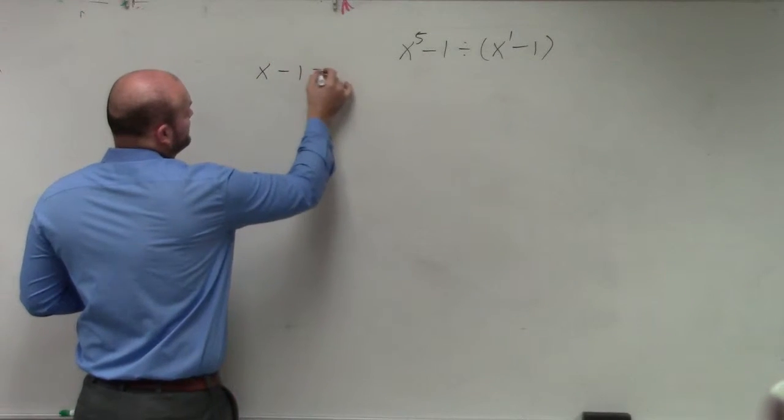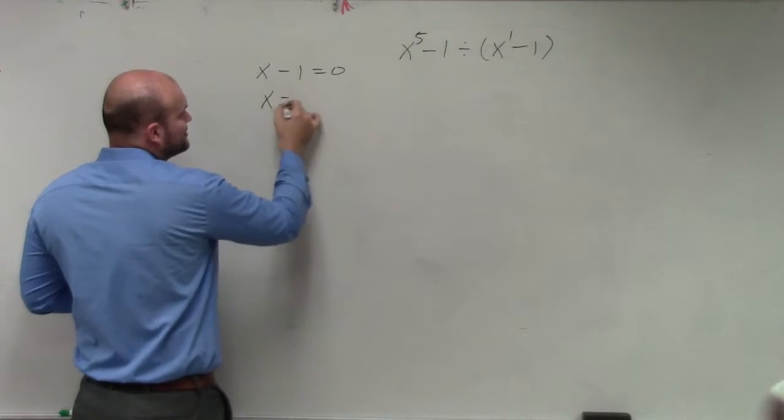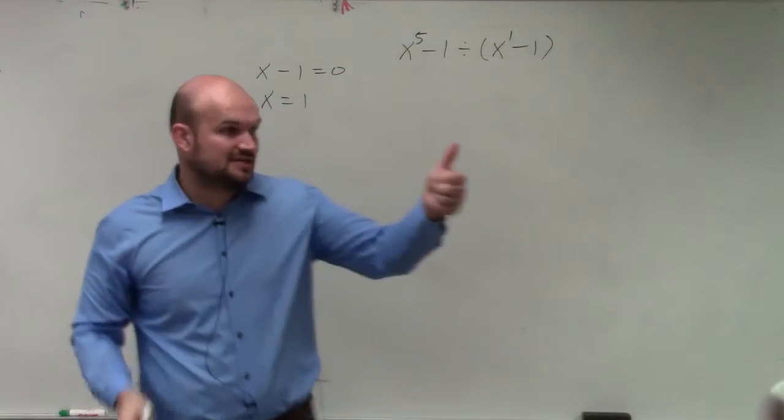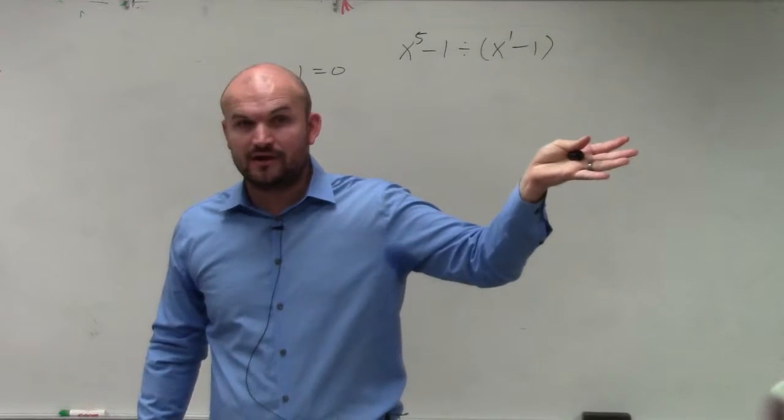So you set your divisor equal to 0, and you find your zero, which is 1. Now, in this case, you guys can see we do not have any x to the fourth, x cubed, x squared, or anything like that, right?